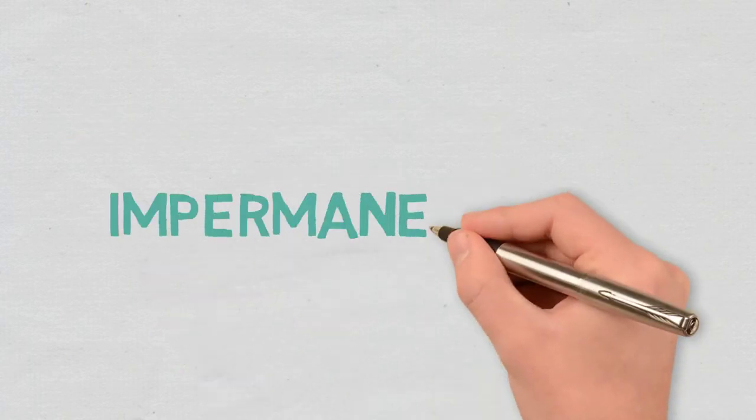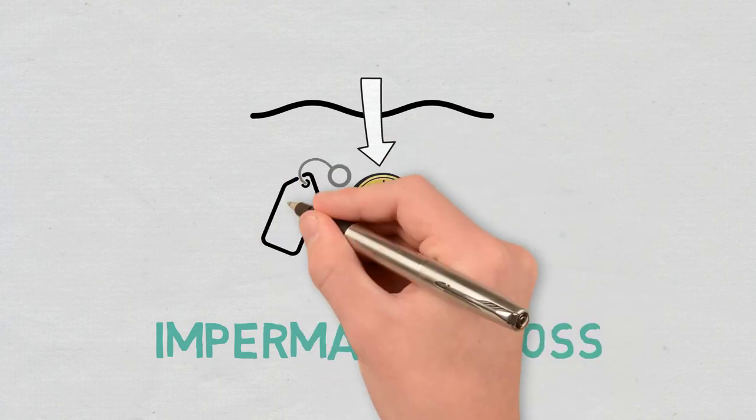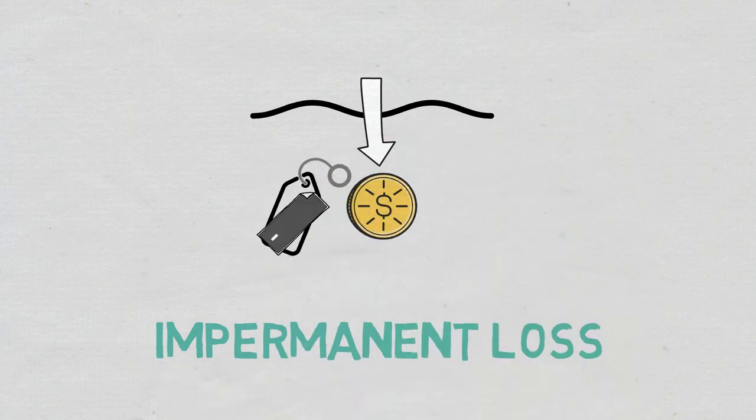Impermanent loss: When a farmer supplies liquidity to an LP and the price of the invested assets changes after the deposit time, an impermanent loss occurs.